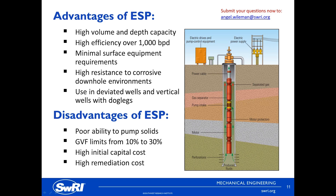Why would an ESP be deployed? It is a high rate, high drawdown form of lift. It is very effective in high water cut, low GVF, and low solids environments — typically about 6 to 10 weight percent of solids. The typical GVF limit of a centrifugal ESP pump is about 10 to 30%, but it depends on the stage type and intake pressure. Gas and solids separation devices can be deployed which can help in high solids and high GVF environments. ESPs can also be installed in highly inclined and horizontal wells.